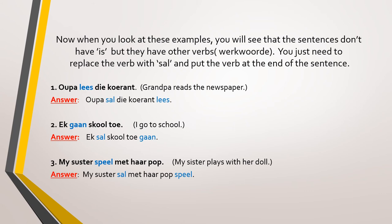Now, when you look at these examples, you will see the sentences don't have es, but they have other verbs or werk word. So you just need to replace the verb with sal and put the verb at the end of the sentence. Let's look at the first example: Opa lias de courant — grandpa reads the newspaper. You will notice that lias is the werk word. So the answer would be: Opa sal de courant lias. Sal took the place of lias in the sentence and lias goes to the end of the sentence.